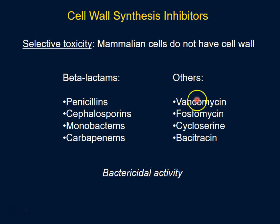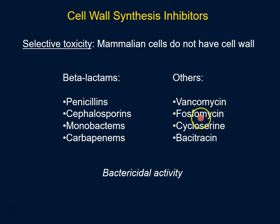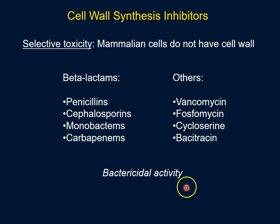Others that fall into this category inhibit cell wall synthesis through other targets, and these are vancomycin, phosphomycin, cycloserine, and bacitracin. All the antibiotics that inhibit cell wall synthesis invariably have a bactericidal activity on the bacteria.